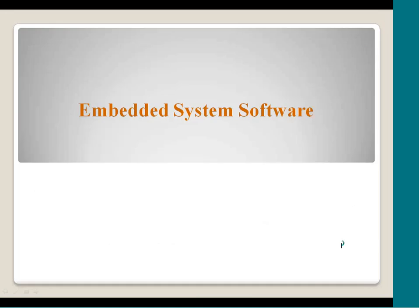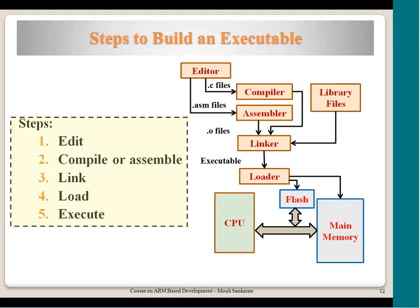Let us talk about embedded system software — how to develop it. The first step is to write software, which could be a C file, C++ file, or assembly file. It goes through a compiler or assembler based on the input, and then the outputs are linked using a linker. There may be library files provided by the processor vendor or tool vendor. The output is loaded into a particular memory device, the CPU starts, and it begins using this code.